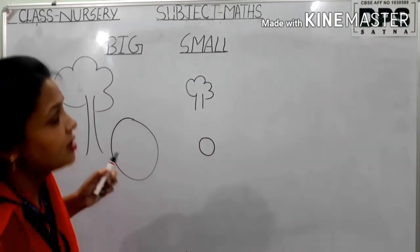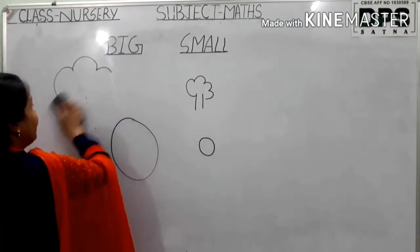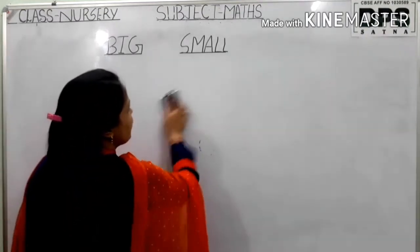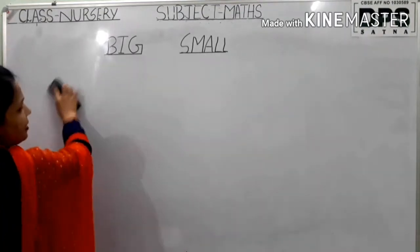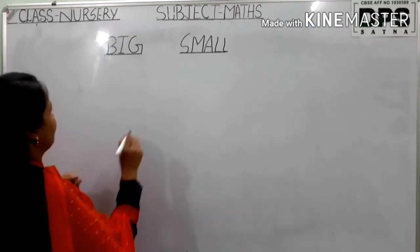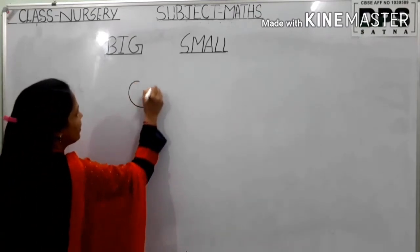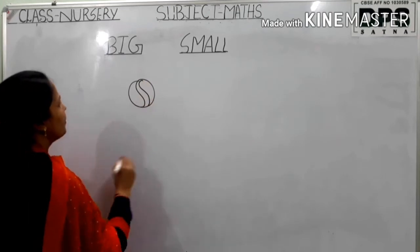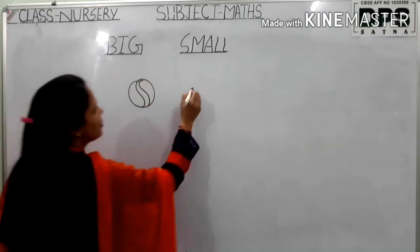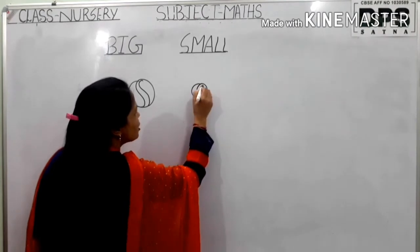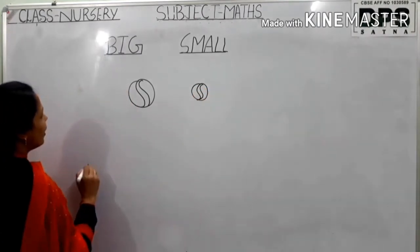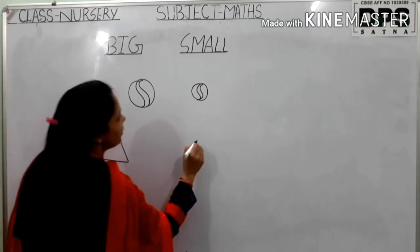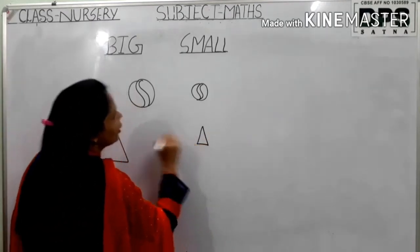In your book there is one exercise — circle the big things. What do you have to do? Only circle the big things. Look here, I am making some objects here — one big ball and here a small ball. Okay, and now I make a big triangle and here a small triangle.